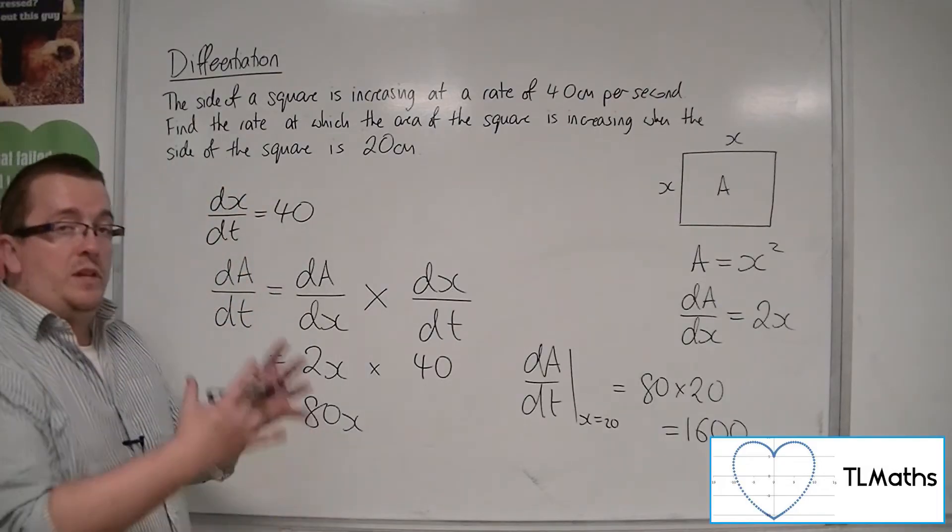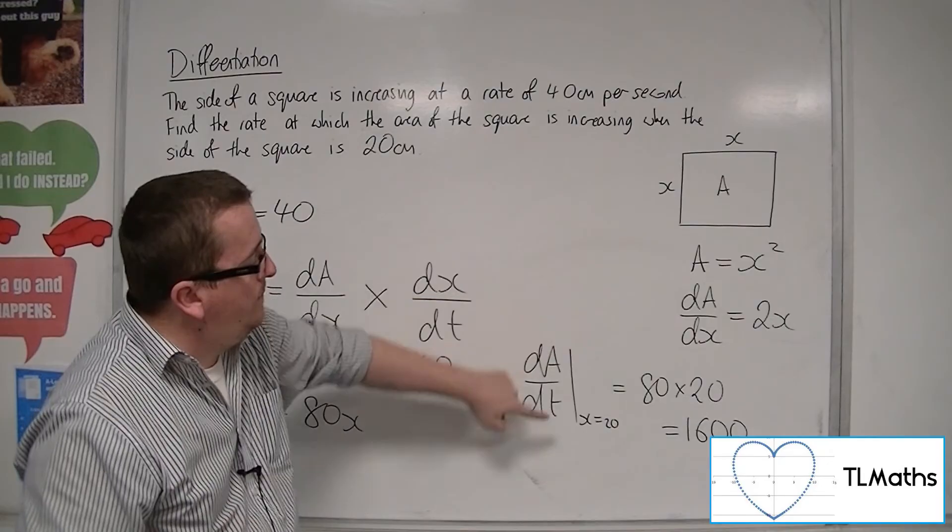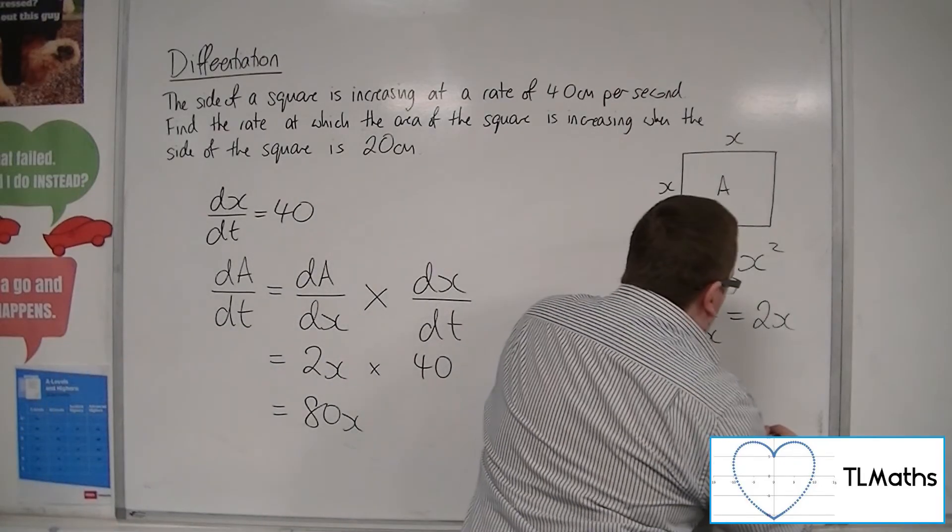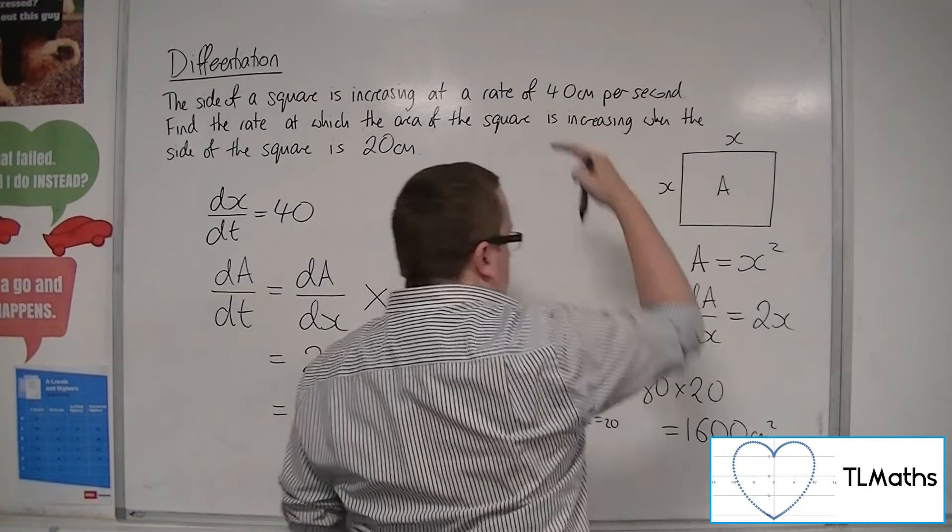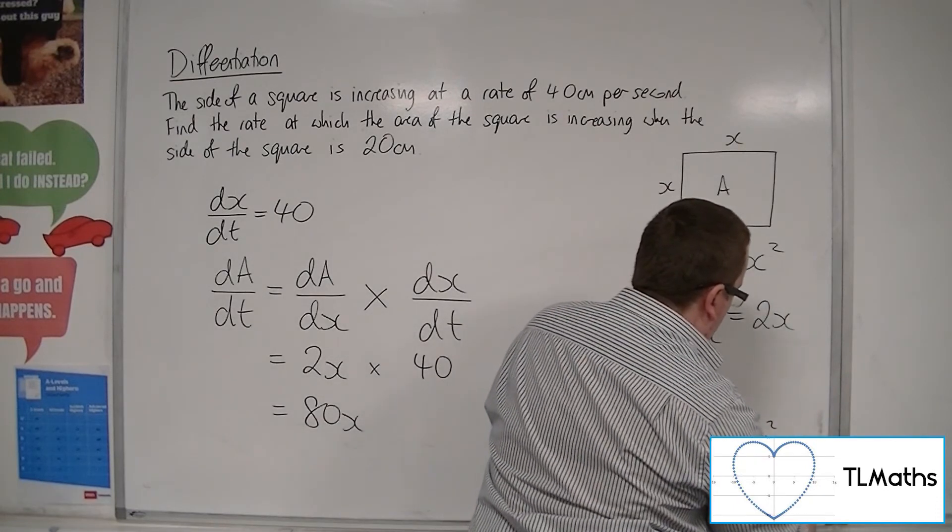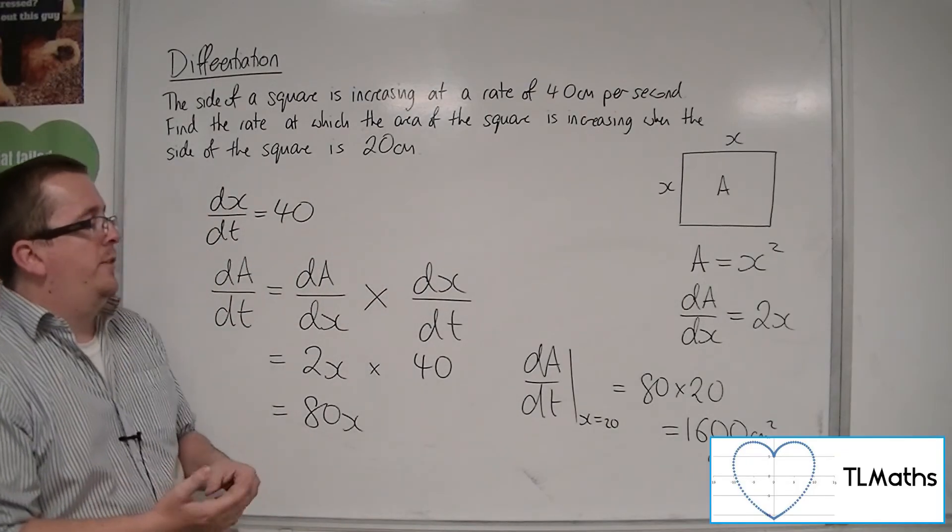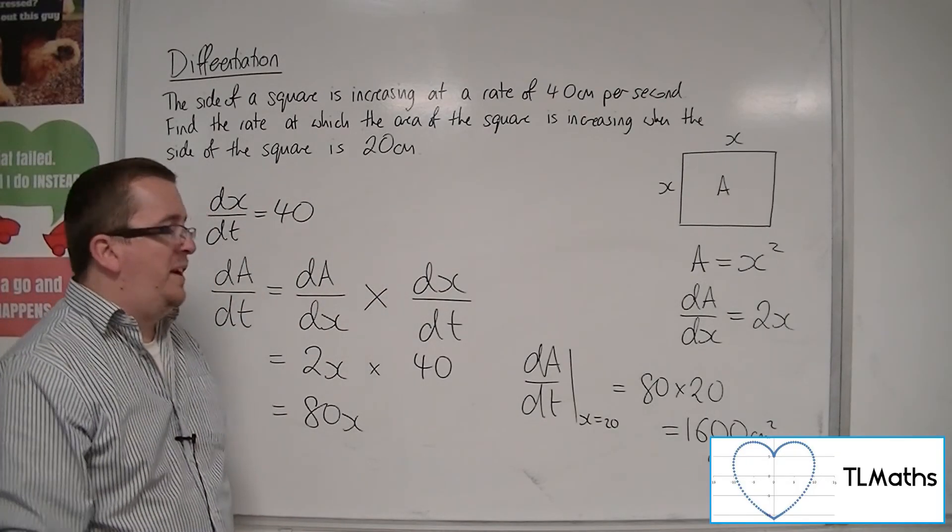And I want to put in the units as well. So the fact that this is area and time, this will be centimeters squared, because we're in centimeters, so centimeters squared per second. So the area is increasing at a rate of 1,600 square centimeters per second.